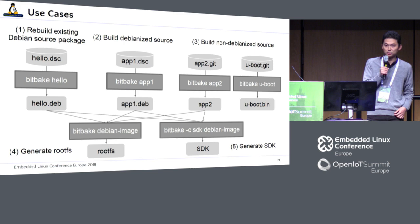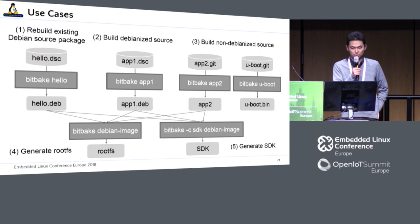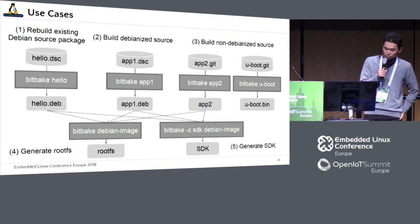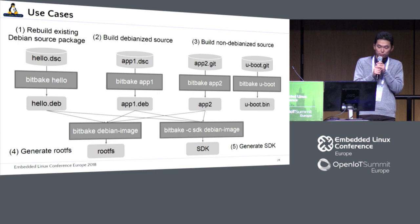The third use case is to build non-Debianized source, which is the normal case in the Yocto project. In such cases, we also want to build applications that are not Debianized, or just build bootloaders, kernels, or similar things. And then generate the root file system or SDK. This should also be done by one command, like bitbake debian-image, which pulls all required binary packages and generates a final root file system or SDK image.